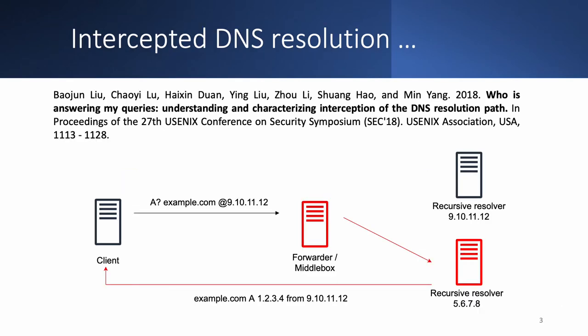One example of manipulation is query interception. Some networks may contain devices called middle boxes that intercept traffic and forward it somewhere else rather than the intended destination. On the figure, the original request is forwarded to an alternative resolver 5.6.7.8, which spoofs its own IP address and pretends to be 9.10.11.12 when sending the response.